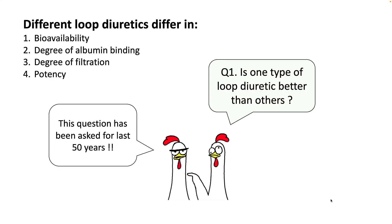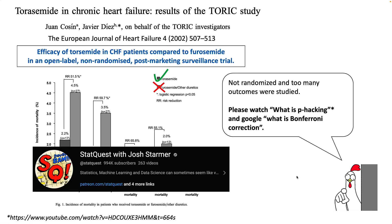The first question is which loop diuretic is better to use. The three loop diuretics we use are furosemide, bumetanide, and torsemide, and these three drugs differ in their bioavailability, degree of albumin binding, degree of filtration, and potency. The three loop diuretics are very old and have a lot of literature comparing one with the other, however most of this literature is not randomized and has serious statistical limitations.